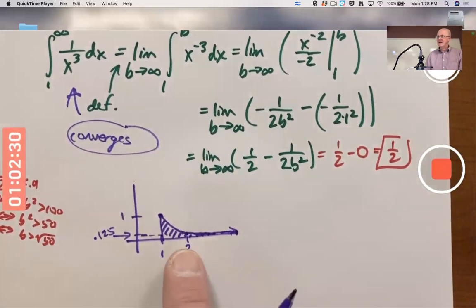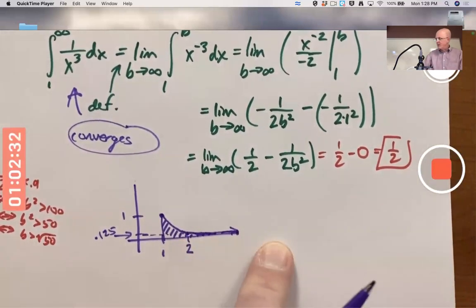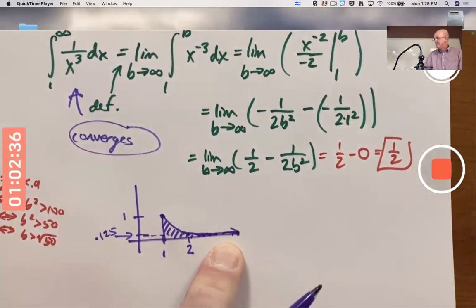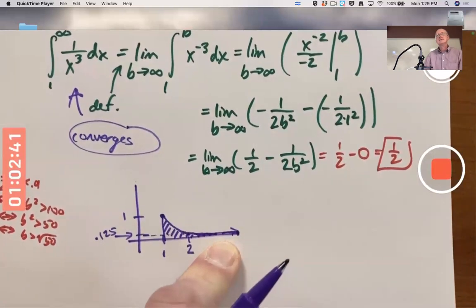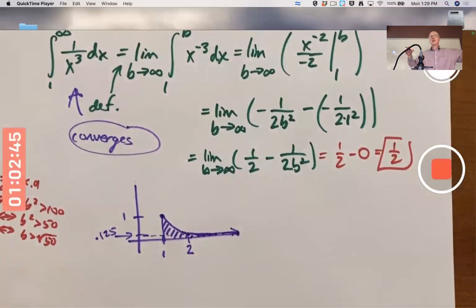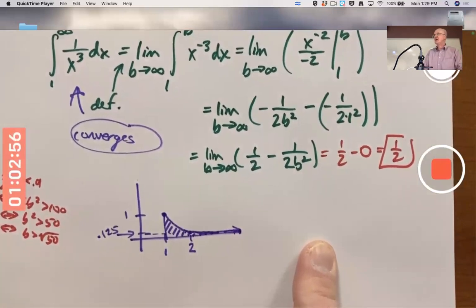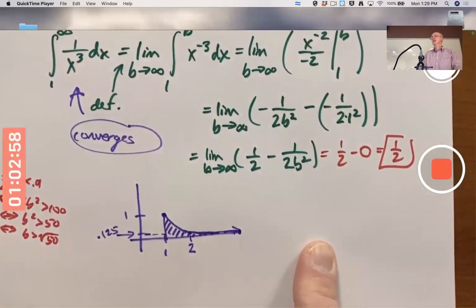And it does make sense to say this area, even though the region itself goes on forever and ever to the right, without ever actually touching the axis here, still has a finite area. Now, of course, nobody can literally draw a region that goes on forever and ever. Nobody can literally draw about it. So it's only in our minds that we imagine it going on forever and ever. And so the only real question is, is that a good thing to imagine? Does it have any applications? And the answer is yes, it does.